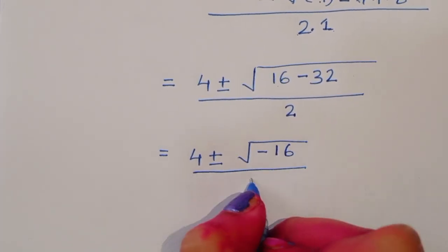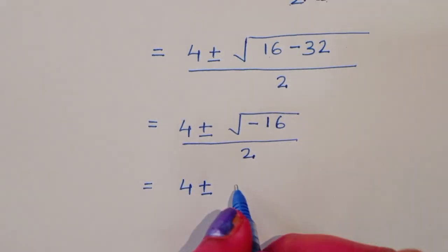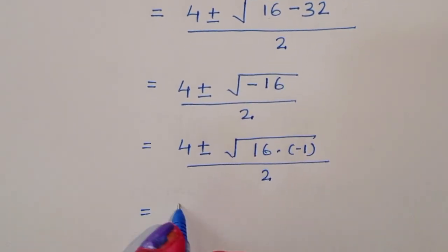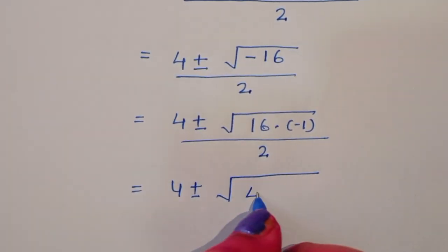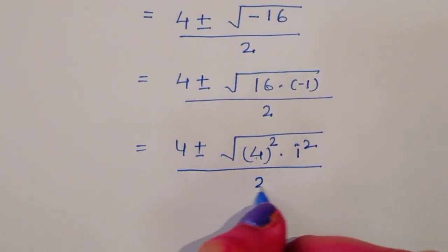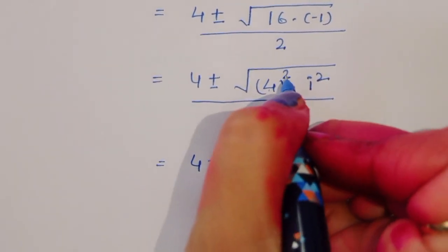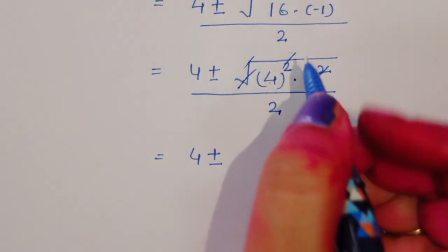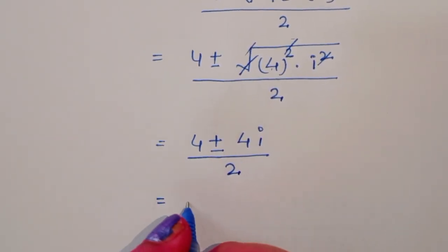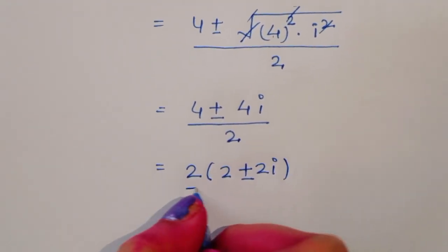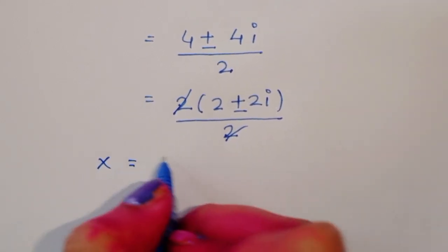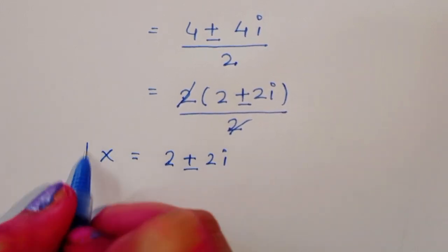Now √(-16) = √(16 × (-1)) = 4 × √(-1) = 4i. So x = (4 ± 4i) / 2. Taking 2 common from numerator: x = 2(2 ± 2i) / 2, and cancelling 2 gives x = 2 ± 2i.